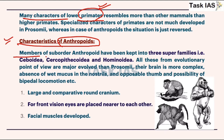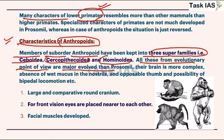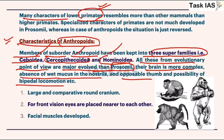Now we will discuss characteristics of anthropoids. Members of suborder Anthropoids have been kept into three super families: Ceboidea, Cercopithecoidea, and Hominoidea. From an evolutionary point of view, all these are more evolved than prosimians. Their brain is more complex, there is absence of a wet mucous nose, an opposable thumb, and the possibility of bipedal locomotion — these are common features of anthropoids.